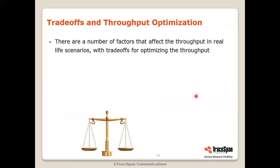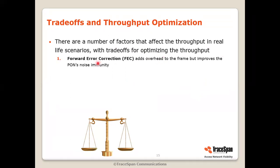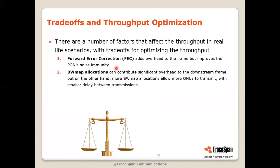There are a number of trade-offs and optimizations that affect throughput in real-life scenarios, and these can help you optimize the throughput. The first is forward error correction (FEC), which we already mentioned. FEC adds overhead to the frame, but it improves noise immunity — so you pay for better noise immunity by giving up some throughput. BWMAP allocations are the allocations for the ONU to transmit in the upstream; they can contribute significant overhead to the downstream frame. But if you have more BWMAPs, you allow more ONUs to transmit with smaller delay between transmissions, utilizing your upstream more efficiently. You can see it as paying a penalty in the downstream to make better use of your upstream.